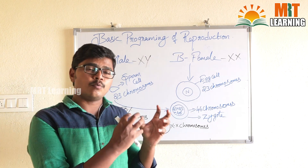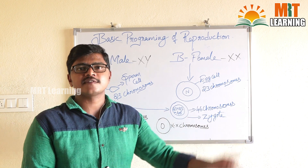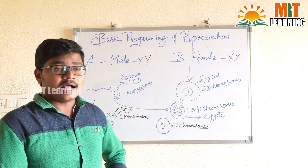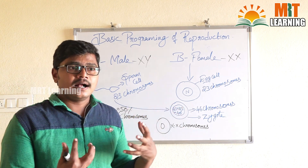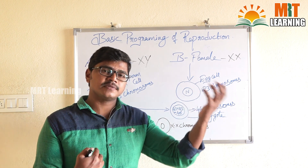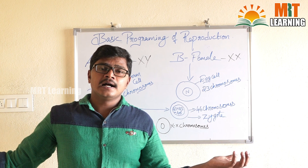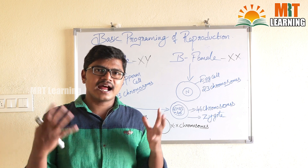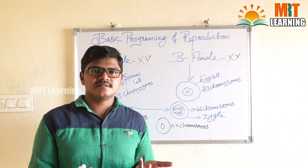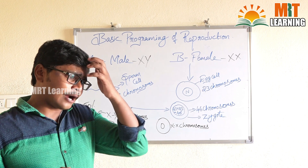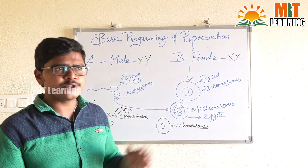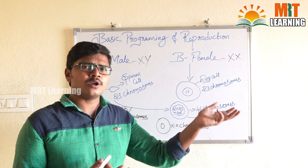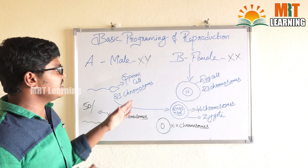The basic programming of reproduction is that the egg needs 46 chromosomes to start the reproduction process. We are getting 50 percent of genes from the mother and 50 percent from the father — 23 chromosomes from the mother and 23 from the father — so we possess 100 percent of genes from both mother and father. Now you have to understand how sex is determined during this reproduction process.